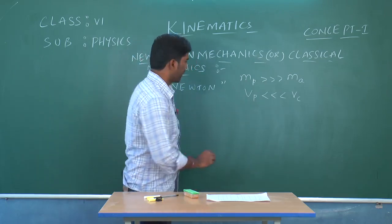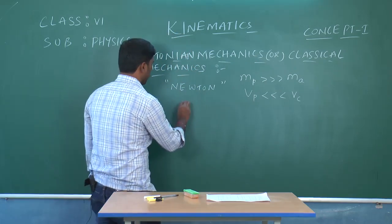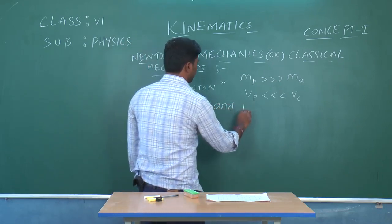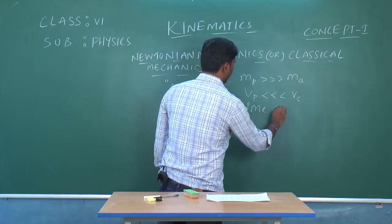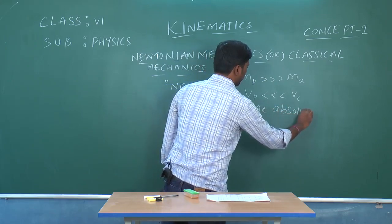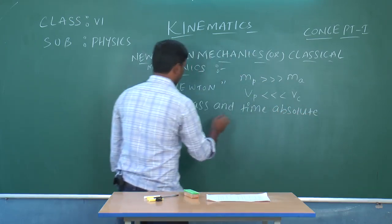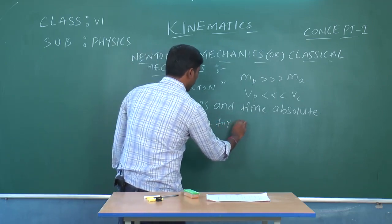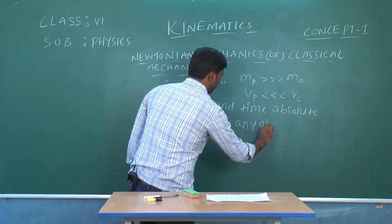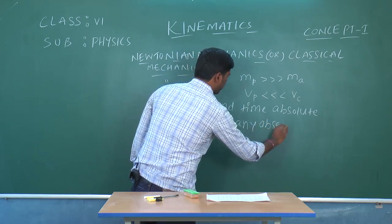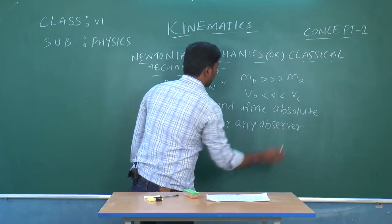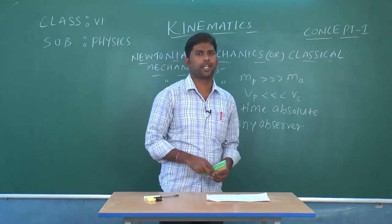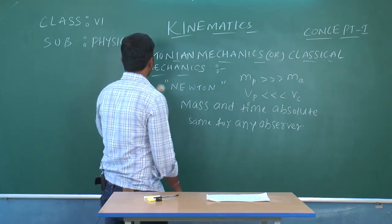In Newtonian mechanics, mass and time are absolute, which means that they are the same for any observer. This is about Newtonian mechanics, or classical mechanics.